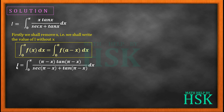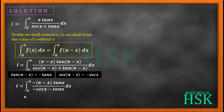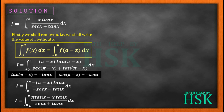Applying the property, we get I is equal to the integral of (pi minus x) into tan(pi minus x) upon sec(pi minus x) plus tan(pi minus x) dx from the limits 0 to pi. Now tan(pi minus x) is equal to minus tan x, and sec(pi minus x) is equal to minus sec x. So we get I is equal to minus (pi minus x) into tan x upon minus sec x minus tan x dx from 0 to pi. Cancelling the negatives and opening the bracket in the numerator, we get I equal to the integral of pi tan x minus x tan x upon sec x plus tan x dx from 0 to pi.